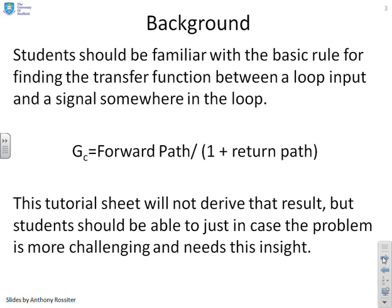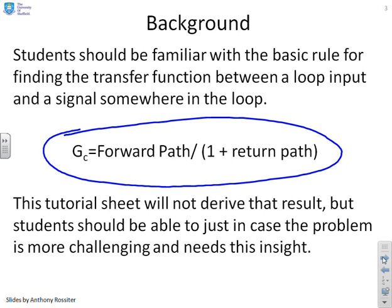A reminder of key information: a rule that's quite important for this particular set of tutorial questions. We'll use this formula that the closed loop transfer function between a loop input and a signal somewhere in the loop is given by the forward path divided by 1 plus the return path, where return path is everything in the loop.